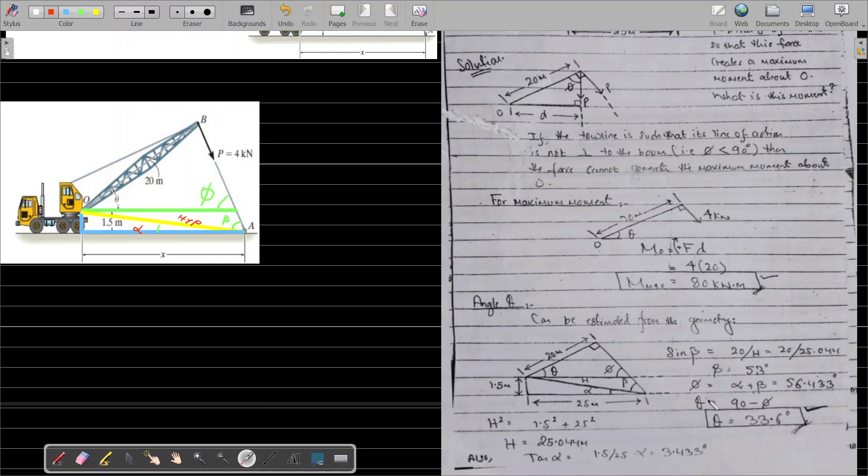Now we have beta. Alpha was 3.433 degrees. Phi equals alpha plus beta, because this alpha and beta, when added together, give you phi. So phi equals 53.56 degrees plus 3.433 degrees, which gives 56.433 degrees.